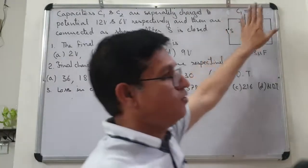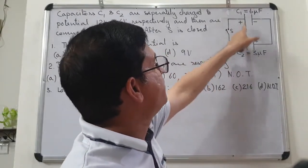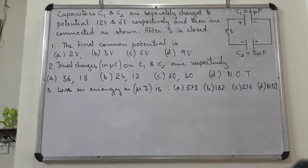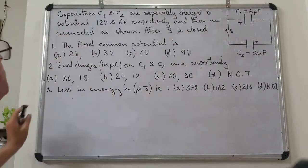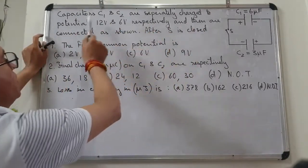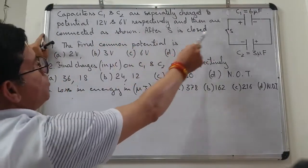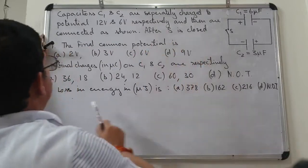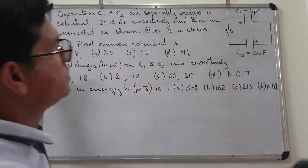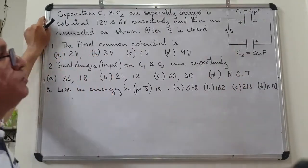Let's go through another set of three questions referring to the given figure. The key information is: capacitors C1 and C2 are separately charged to potentials 12 volt and 6 volt respectively, and then connected as shown in the figure after switch S is closed. We have two capacitors C1 and C2 with values 6 microfarad and 3 microfarad.